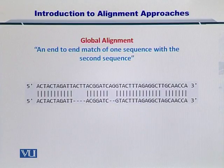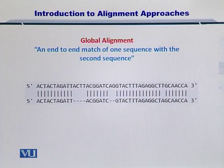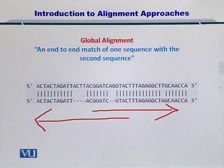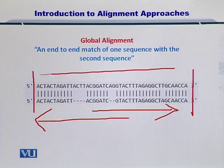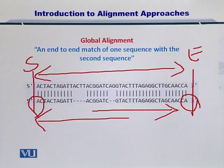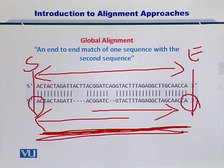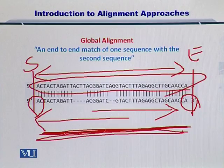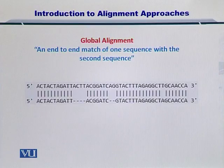Now, global alignment. In local alignment I was trying to align two sequences by searching for the smaller sequence in the bigger sequence. Here, in global alignment, what I have done is I have stretched the shorter sequence to match from the start of the longer sequence all the way to its end. This is the start and this is the end, and the shorter sequence has the same start and end. If you consider the shorter sequence like a rubber band, I have stretched it to become equal in size to the longer sequence. I have created an end-to-end match of one sequence with the second sequence.